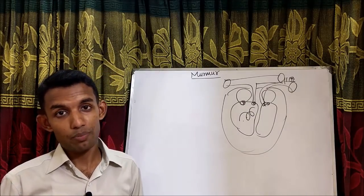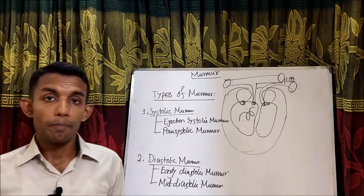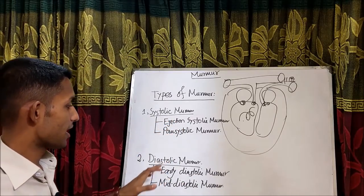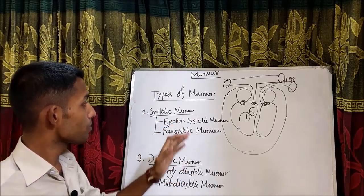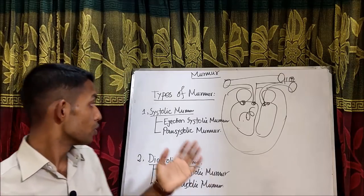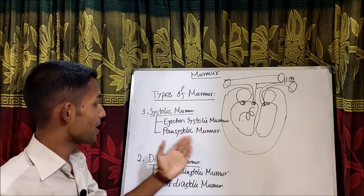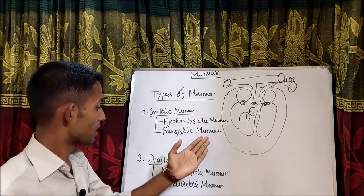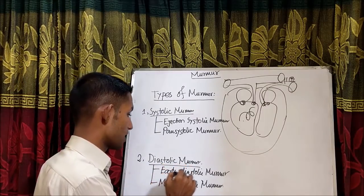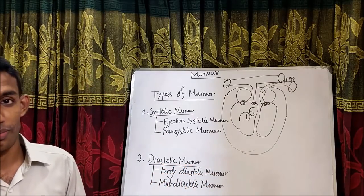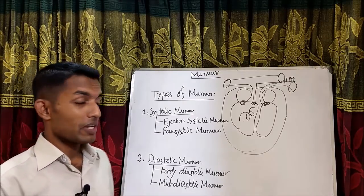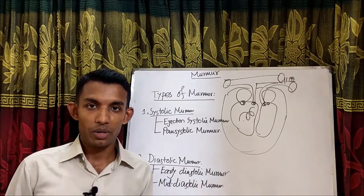Now, what are the types of murmur? Basically there are two types: systolic murmur and diastolic murmur. Systolic murmur can be classified into ejection systolic murmur and pansystolic murmur. Diastolic murmur is classified into early diastolic murmur and mid-diastolic murmur.